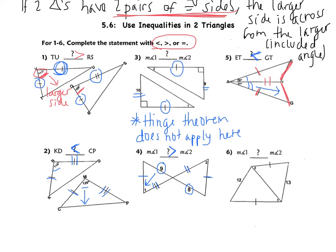Does the hinge theorem apply? I have one pair of congruent sides, two pairs of congruent sides, so yes, the theorem applies. I'm given sides and not angles: 13 and 12. 13 is the bigger side, so angle two is the bigger angle. That means the measure of angle one is going to be less than the measure of angle two.